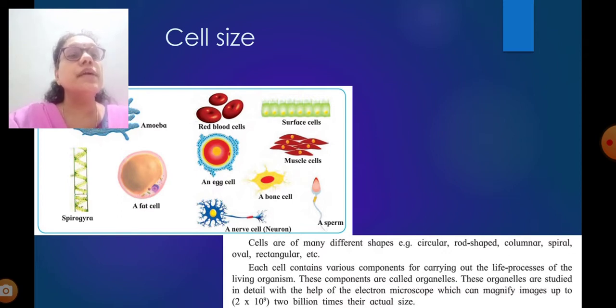Each cell contains various components for carrying out the life processes of the living organisms. These components are called organelles. These organelles are studied in detail with the help of the electron microscope which can magnify images up to 2 into 10 raise to 9, 2 billion times their actual size.